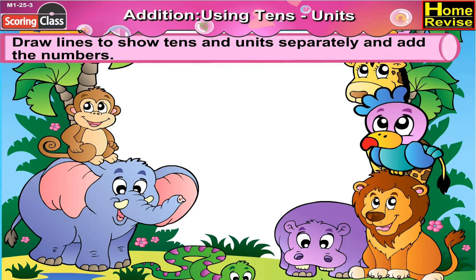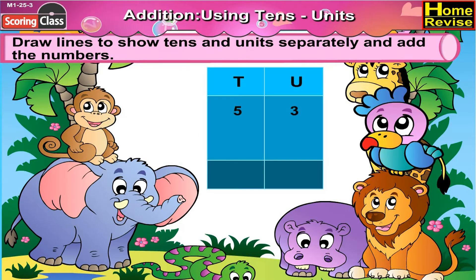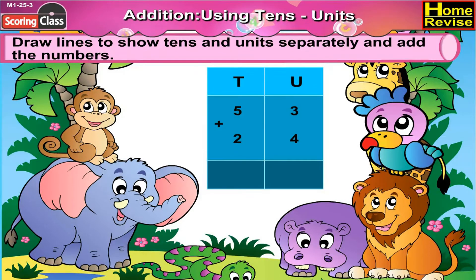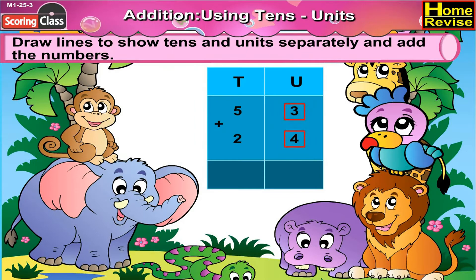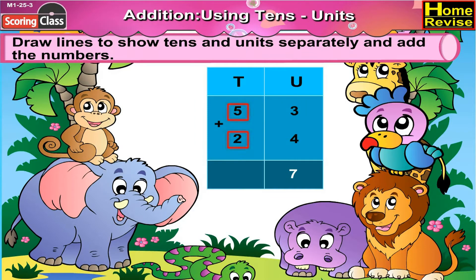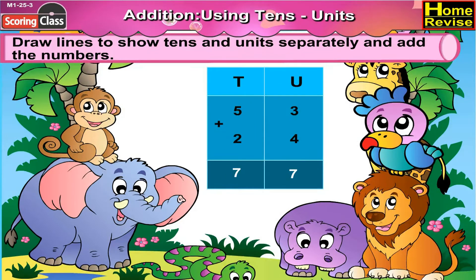Now the last is 53 plus 24. We will draw a line between 53 and 24. 3 plus 4 is 7, 5 plus 2 is 7. So 53 plus 24 is 77.